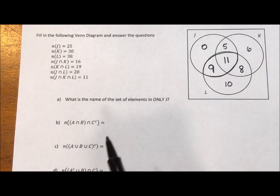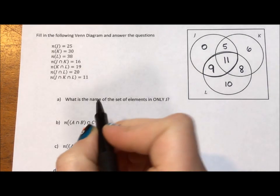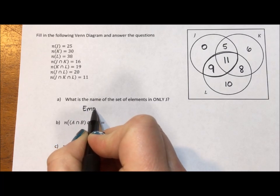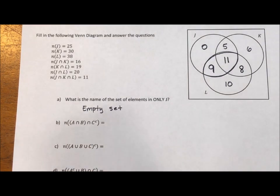Okay, it says, what is the name of the set of elements in only J? That is called an empty set. It's also called a null set. It's often symbolized like that. A set with no elements.